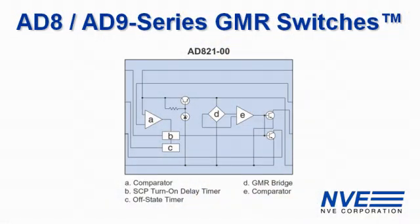For this demo, we're using the popular 8821-00 GMR switch. This sensor includes interface circuitry and is a turnkey solution for cylinder position sensing.